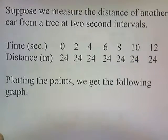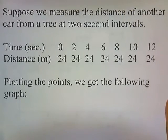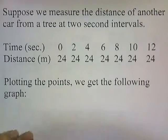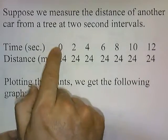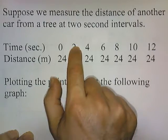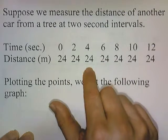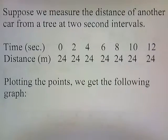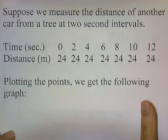Now suppose we measure the distance of another car from a tree at 2-second intervals. We start the stopwatch at time zero. When we start the stopwatch, the car is 24 meters from the tree. Then 2 seconds later, the car is 24 meters from the tree. And 4 seconds later, the car is still 24 meters from the tree. If we plot these points, we get the following graph.